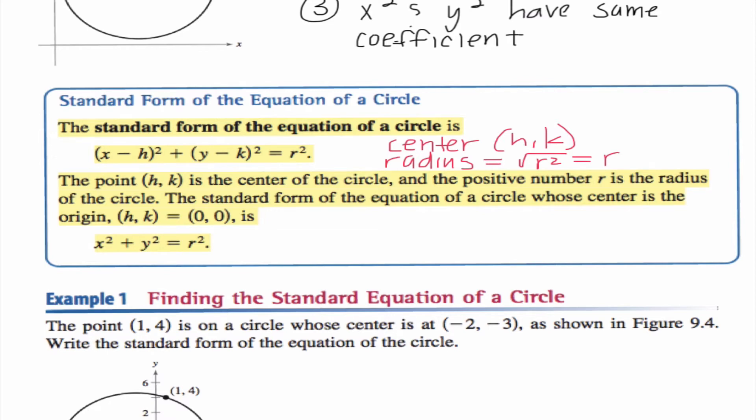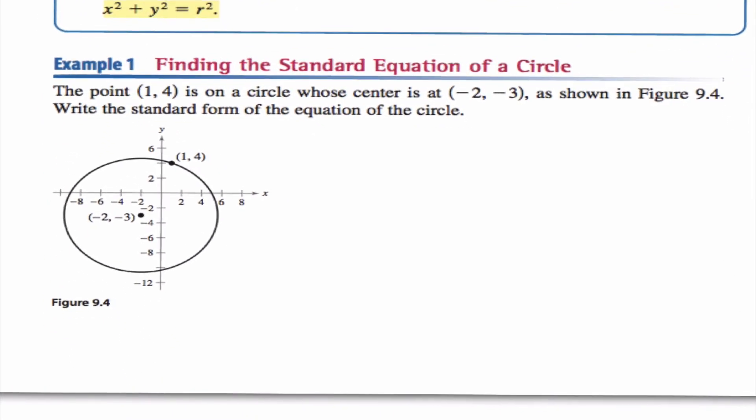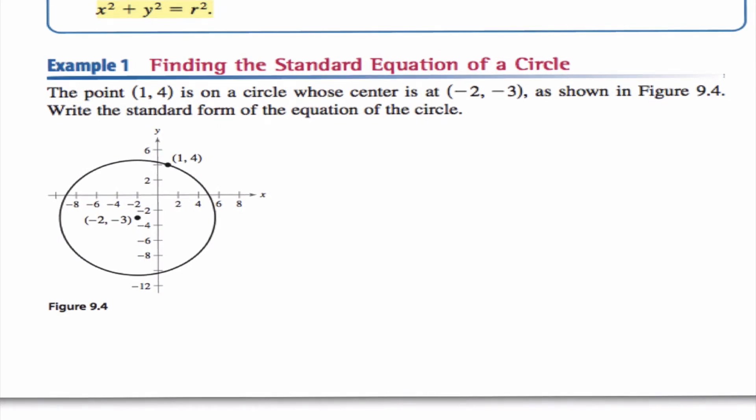So today we're going to be doing a few things with this. Example number one, this is something that we really haven't spent much time doing in previous courses. It says we need to find the standard equation of a circle. It tells us a point on the circle and it tells us what the center is, and we need to write the standard form of the equation of the circle. So I'm going to start here by just writing (x - h)² + (y - k)² = r², because that's our general equation for our circle. Now the information that we know that's always going to be true for this equation is that the center is (-2, -3).